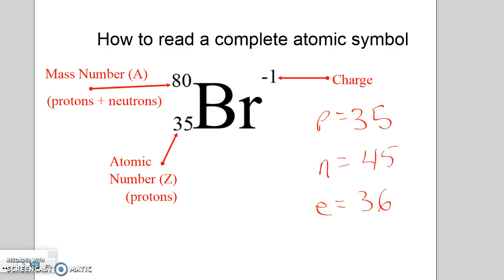So try to construct a complete nuclear atomic symbol from the following. Let's imagine that you have an atom that contains 30 protons, 35 neutrons, and the number of electrons is 28. Go ahead and see if you can do that.